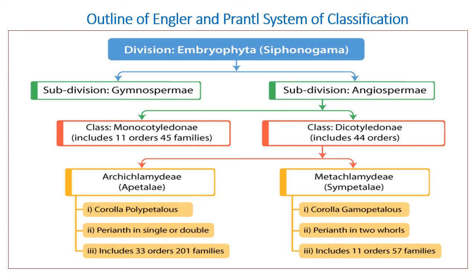The outline of the Engler and Prantl system of classification: the 13th division, Embryophyta Siphonogama, is divided into two subdivisions — gymnosperms and angiosperms. Angiosperms are again divided into two classes: Monocotyledoneae and Dicotyledoneae. Dicotyledoneae is further divided into two groups: Archichlamydeae and Metachlamydeae.